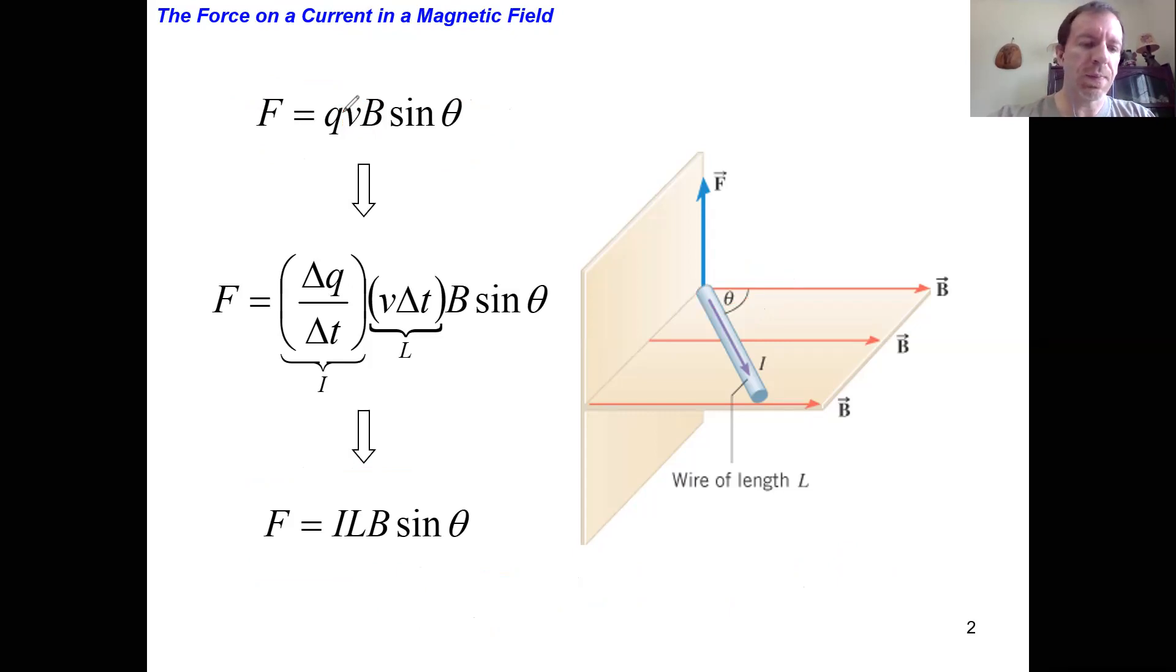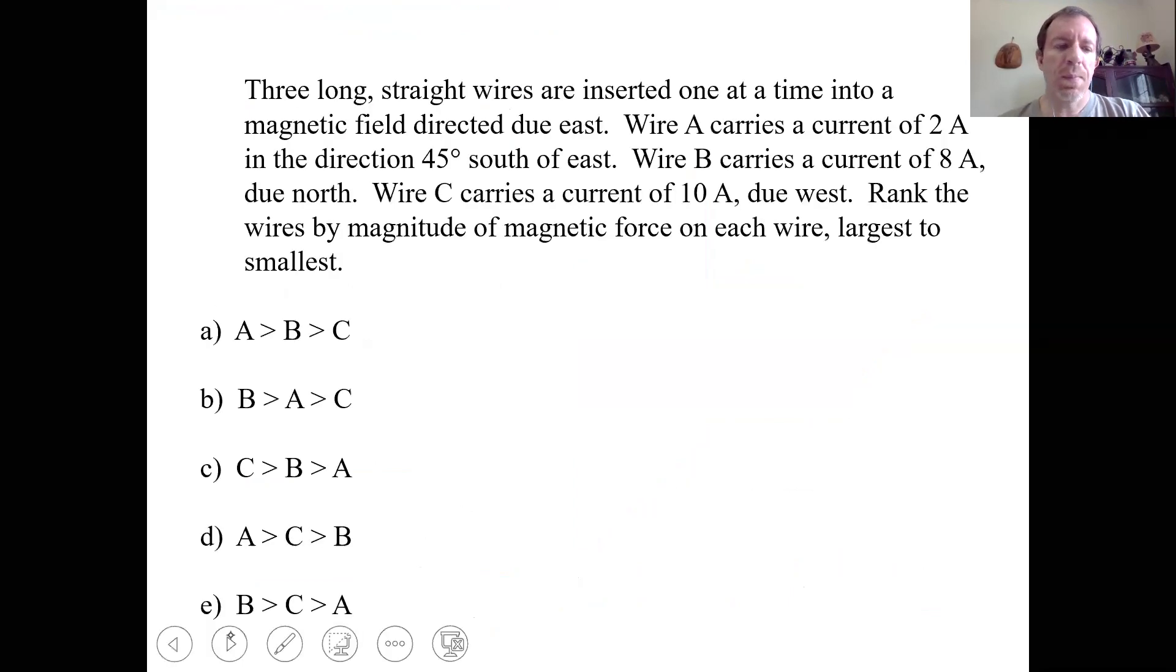So let's see. All right. This is again, a multiple choice question, a clicker question. So we've got three different wires in a magnetic field, wire A, B, and C, and it is your job to try to rank these wires in terms of how much magnetic force or how much force is actually going to be exerted on each wire. So pause the video and see if you can come up with a response.